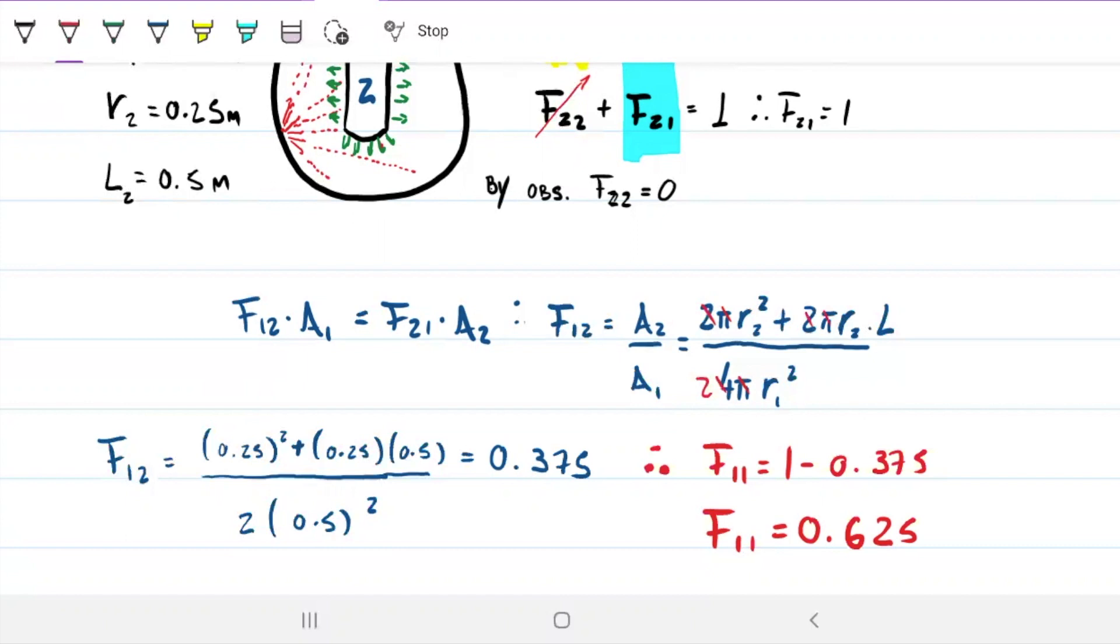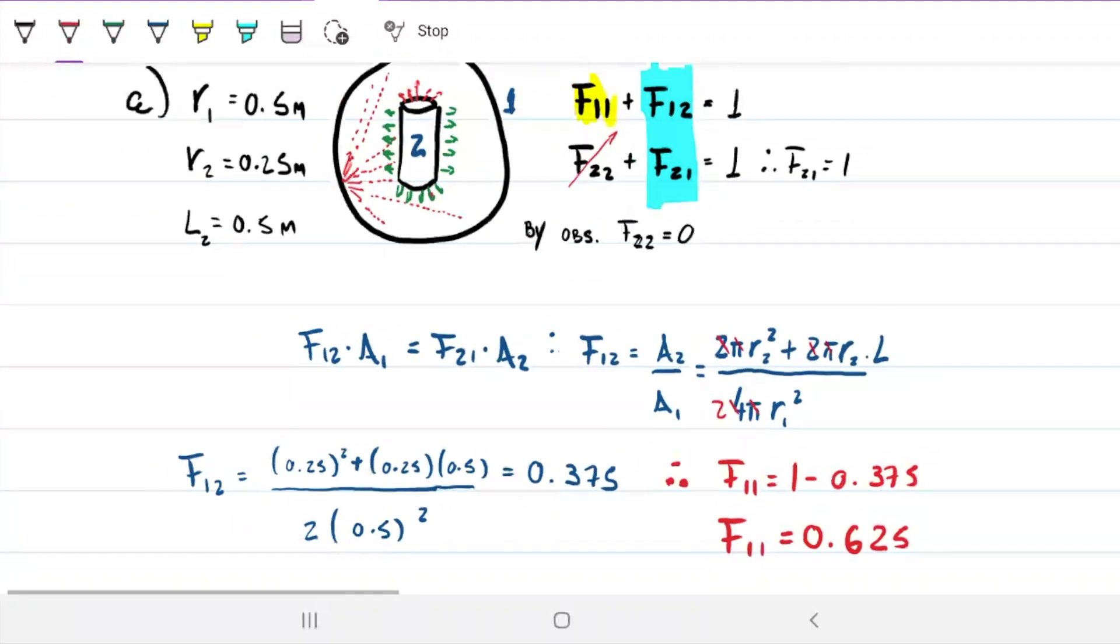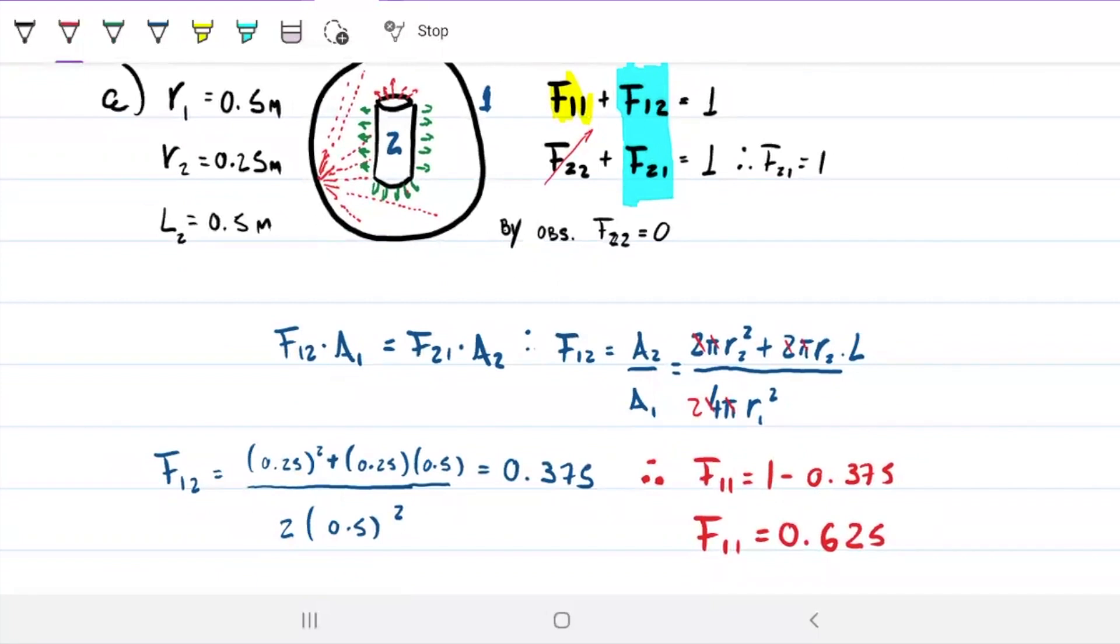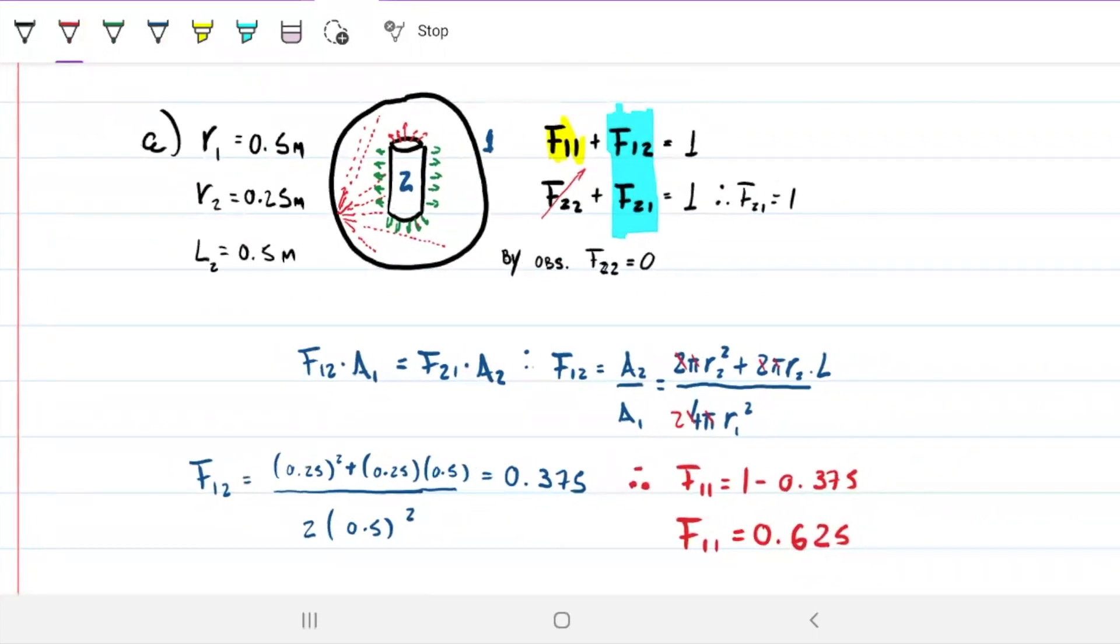So what do we know now? Now we know that 62.5% of the energy that leaves the sphere is being absorbed by the sphere itself, while 37.5% of the energy that leaves the sphere is absorbed by the cylinder. So that is how we solved shape factors. This could ask you to find Q given temperatures, but the bottom line is 62% of the energy that leaves the sphere is actually being received by the sphere again. And only 40% actually reaches the cylinder here in the middle.